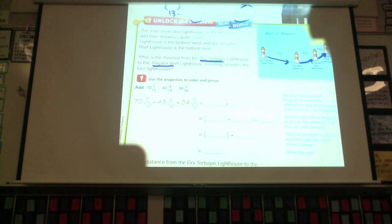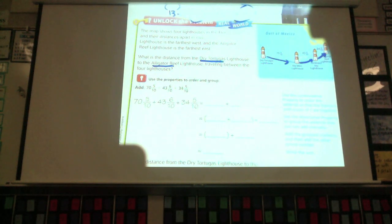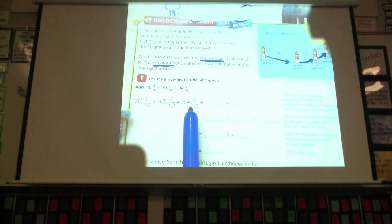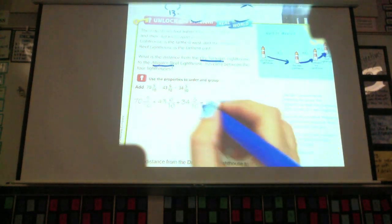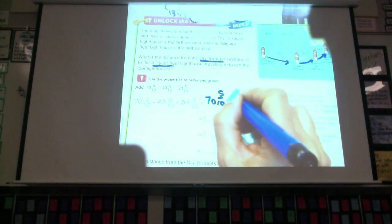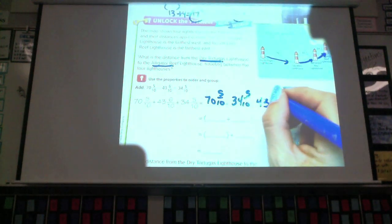Can anybody tell me two that would go together nicely that I might want to add first? What do you think, Benny? The two that have the 5 tenths, correct? Why would that work best? Lydia? Because 5 plus 5 equals 10, and the denominator is 10, so it equals one whole. Very good. So, the 5 tenths plus the 5 tenths will equal 10 tenths, which will equal one whole. So, I'm going to put 70 and 5 tenths, plus, I'm going to put this one next, 34 and 5 tenths, because this is the order I want them. And which property am I using right now?